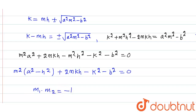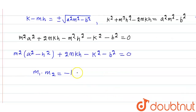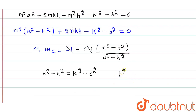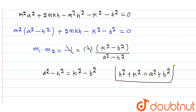Since m1·m2 = -1, applying the product of roots formula (c/a): (-k² - b²)/(a² - h²) = -1. The negatives cancel, giving a² - h² = k² - b², which simplifies to h² + k² = a² + b². This is the required locus.